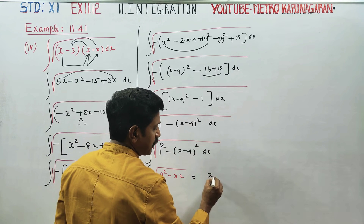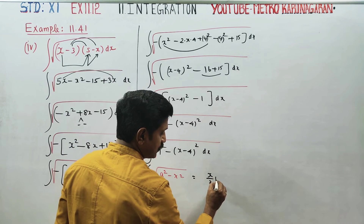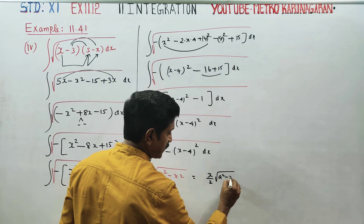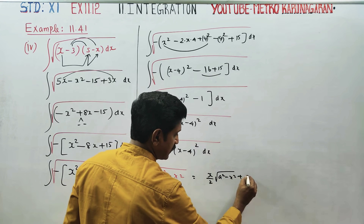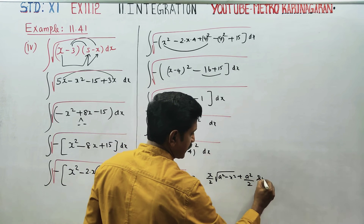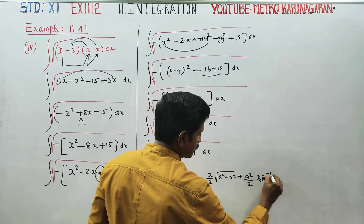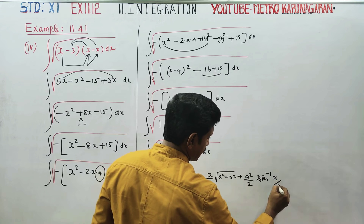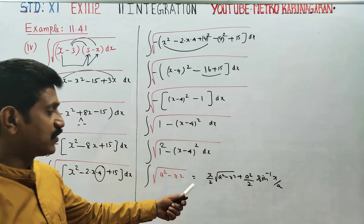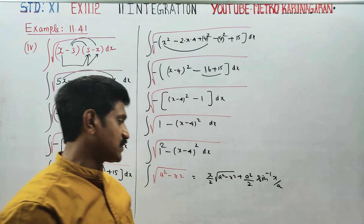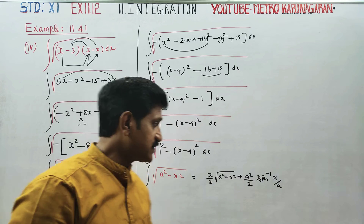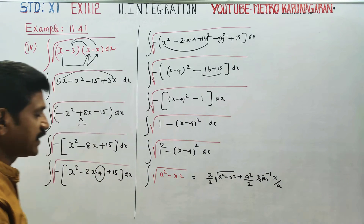The direct formula is: integral of root of (a squared minus x squared) equals x by 2 times root of (a squared minus x squared) plus a squared by 2 times sine inverse of x by a.